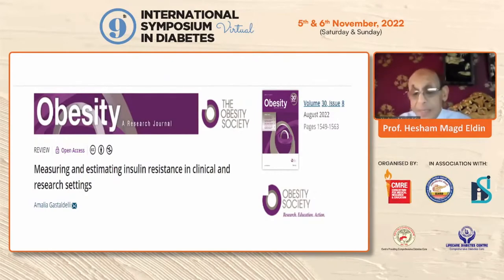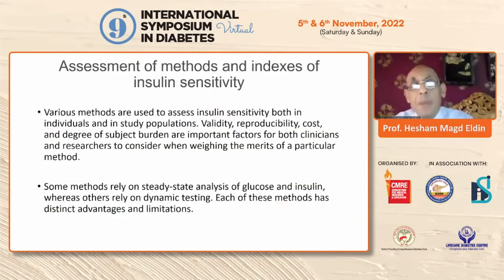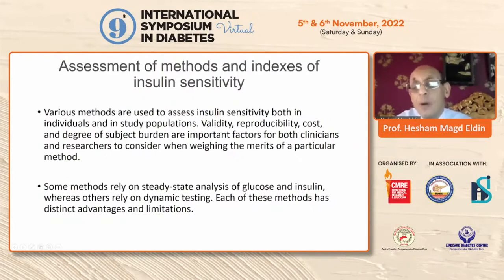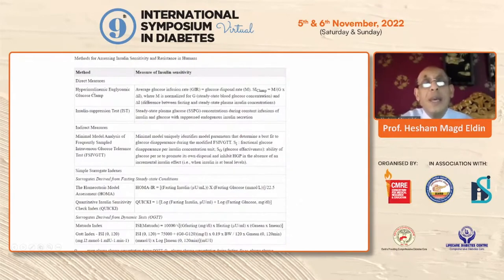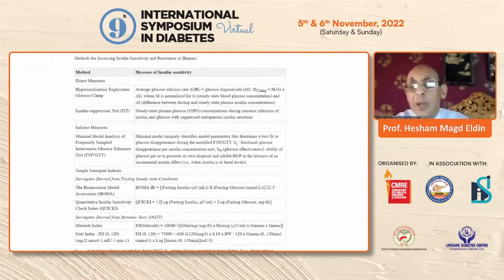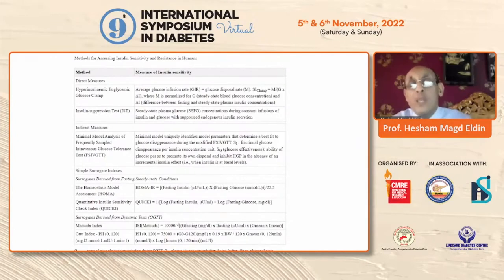To assess insulin resistance, we have different methods — not only the homeostasis model that we use in our clinic. Some methods use steady-state analysis of glucose and insulin, while others study dynamic testing after glucose introduction. The direct measure is the hyperinsulinemic euglycemic clamp, where insulin is infused to hyperphysiological levels while glucose is co-infused to prevent hypoglycemia. From the steady state, using different equations, insulin sensitivity or resistance can be measured.